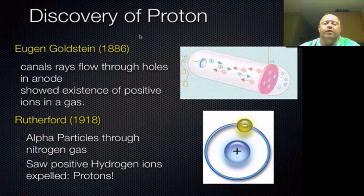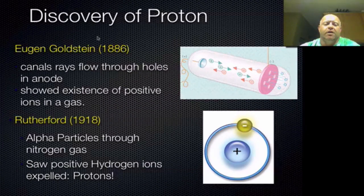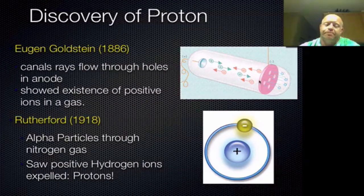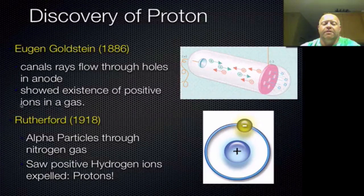Once the nucleus was discovered, the next key piece was discovering the proton. The proton is accredited to several scientists, most commonly Eugene Goldstein. Goldstein ran a very similar experiment to J.J. Thompson's, using a cathode ray tube, but he reversed the polarity on the tube. As a result, he was actually able to detect positively charged flow, giving us the idea that there are positively charged particles. In reality, his experiment was just showing positively charged ions — he wasn't producing pure protons — but it was a very key step in the process.